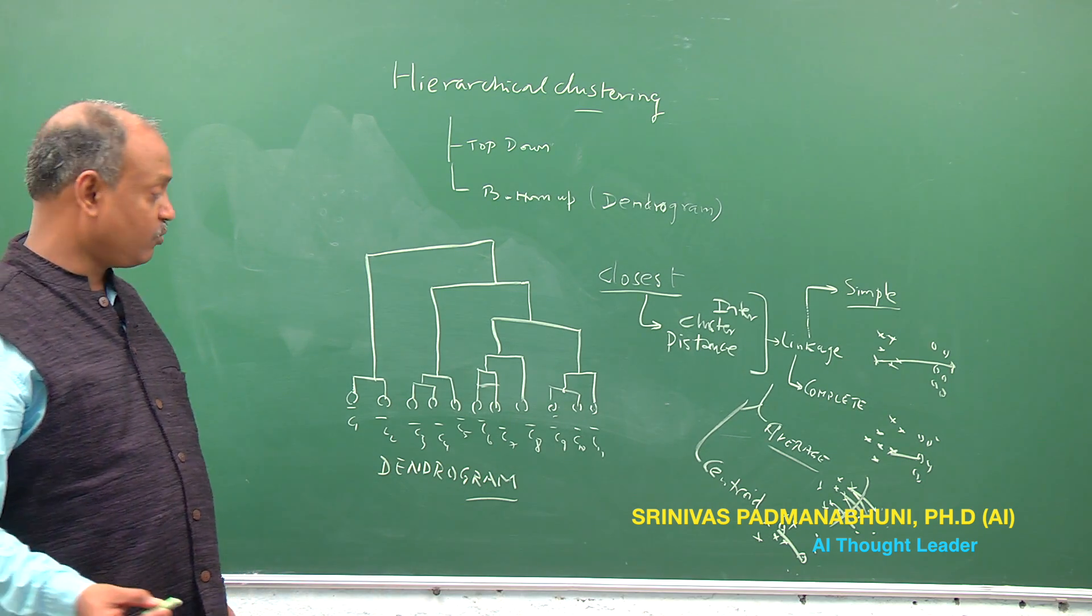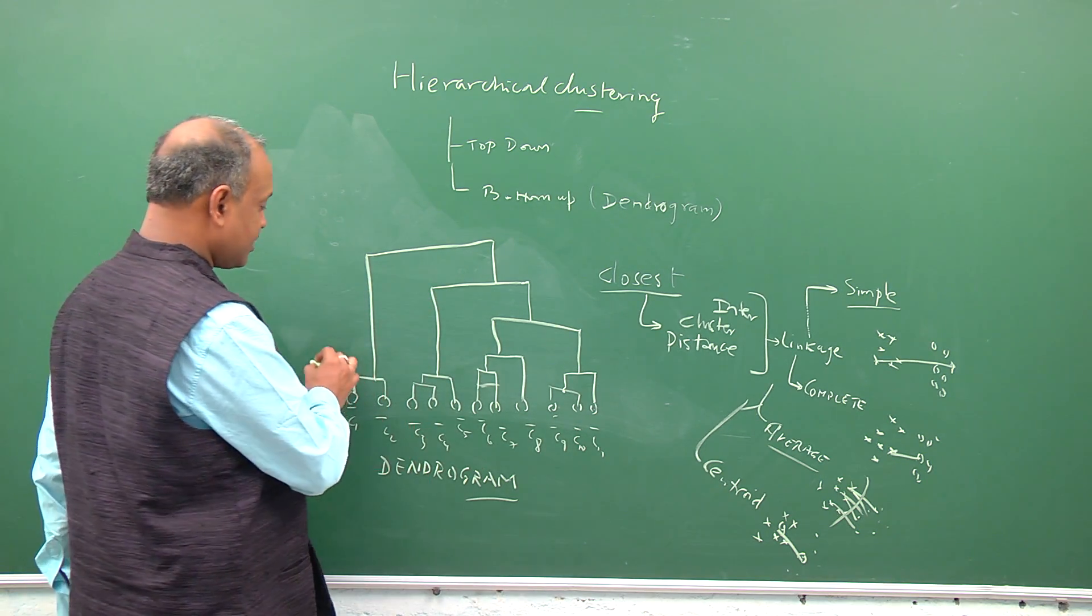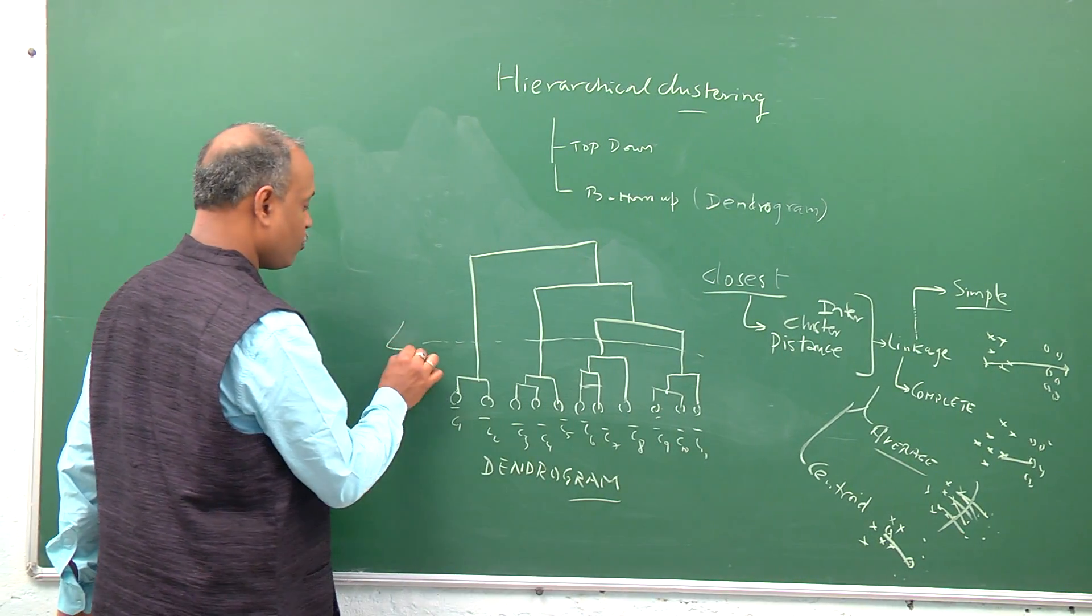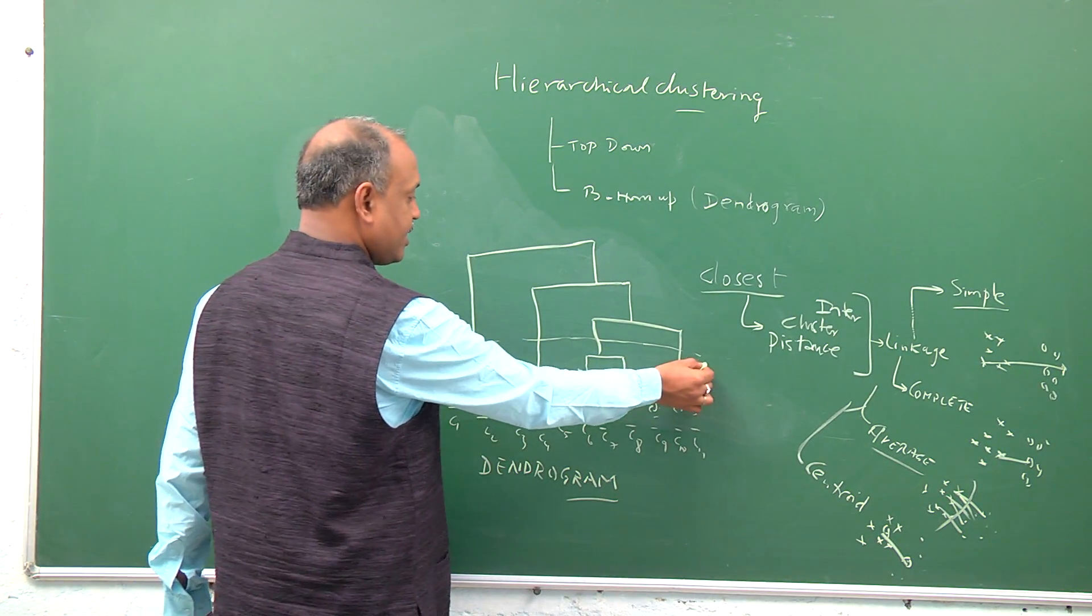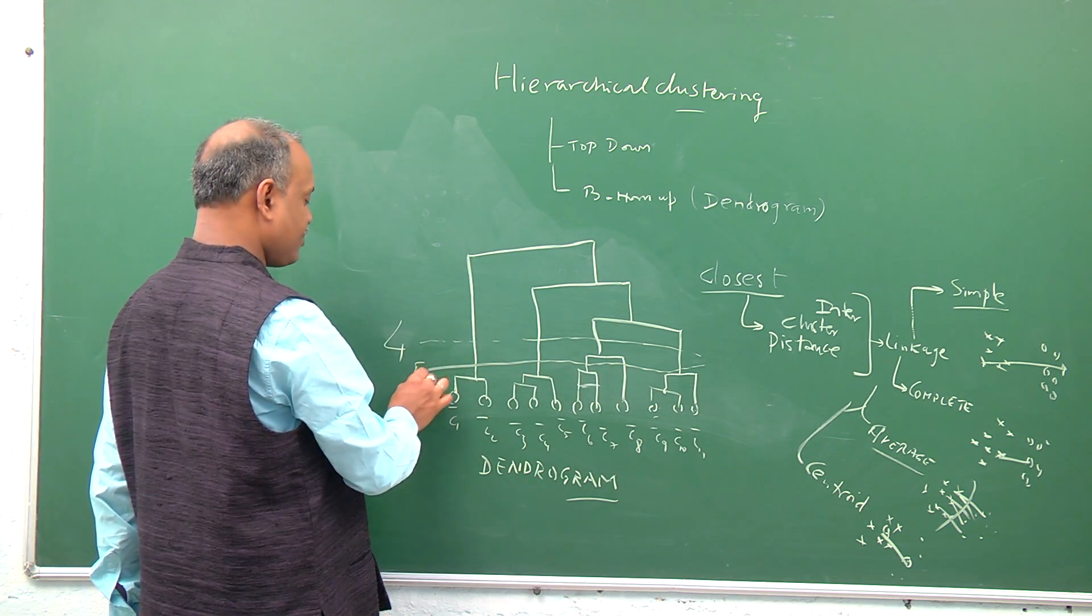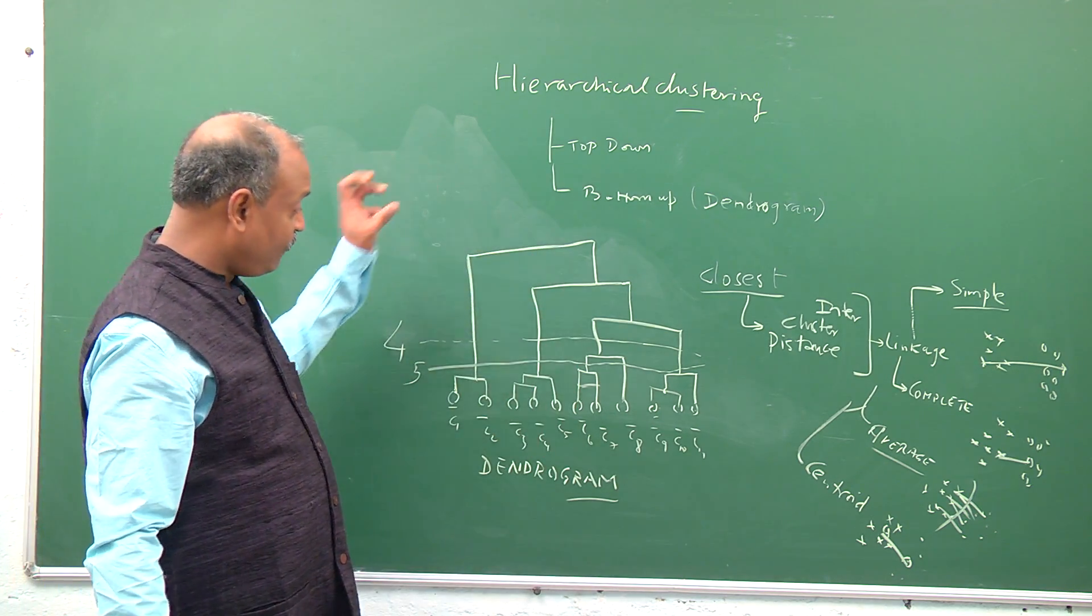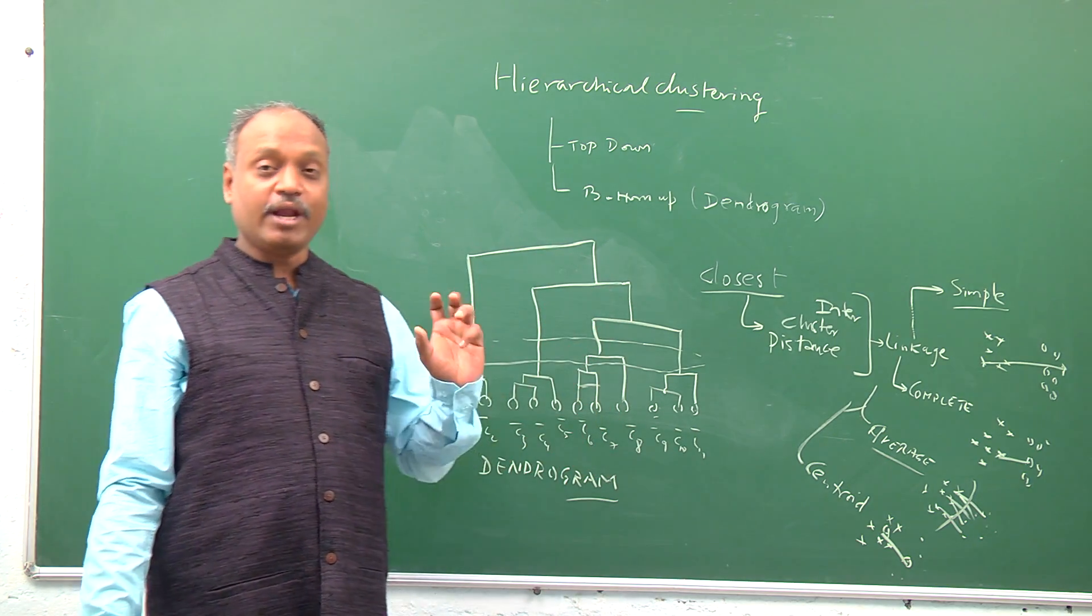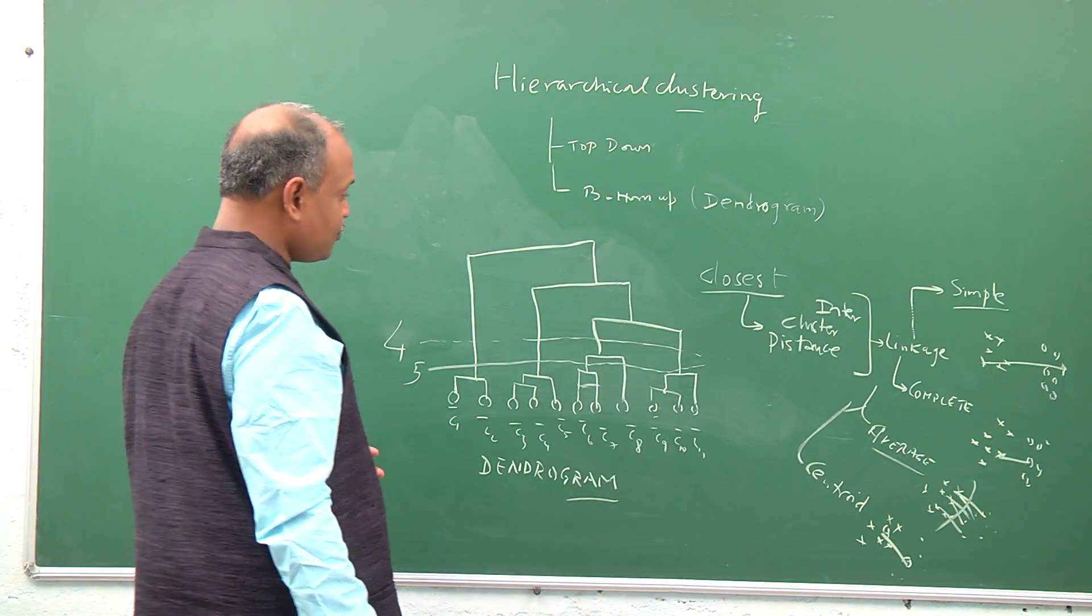So now having formed a dendrogram, we have the luxury of finding out what is the right number of clusters you would like to work with. That depends on where you want to intersect. Suppose you want to intersect the problem at this point, so here we talk about four clusters. On the other hand, suppose you want to go at this point, this forms five clusters. You go slightly lower and form six clusters. So depending upon where to intersect the bottom-up formed dendrogram, you can now decide what is the number of clusters that is formed.